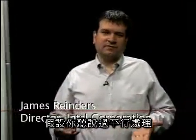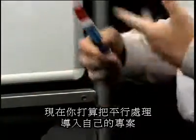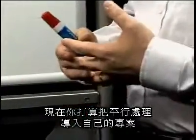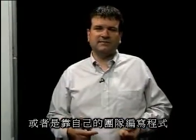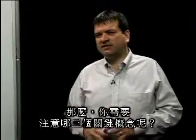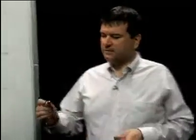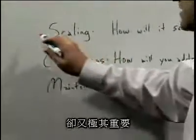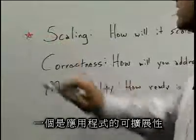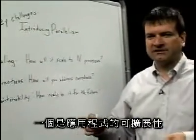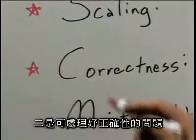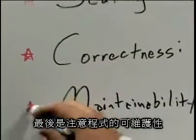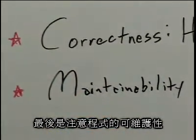You've heard about parallelism, you've heard about multi-core, and you're thinking of introducing parallelism into your project — either by doing some coding in your own team or perhaps buying some solutions from a supplier. What are the three key concepts you should be concerned about? They're pretty simple ones but extremely important. One is scaling or the scalability of your application as you develop it. Another one is addressing correctness issues. And finally, having an eye towards the maintainability of what you're producing.